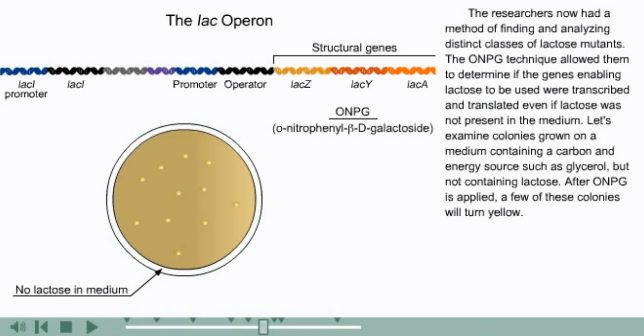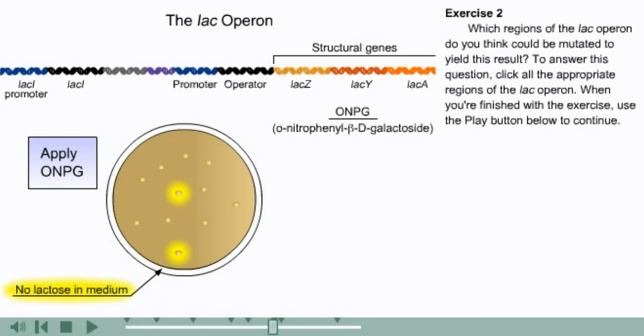The researchers now have a method of finding and analyzing distinct classes of lactose mutants. The ONPG technique allowed them to determine if the genes enabling lactose to be used were transcribed and translated even if lactose was not present in the medium. Let's examine colonies grown on a medium containing a carbon and energy source such as glycerol but not containing lactose. After ONPG is applied, a few of these colonies will turn yellow.